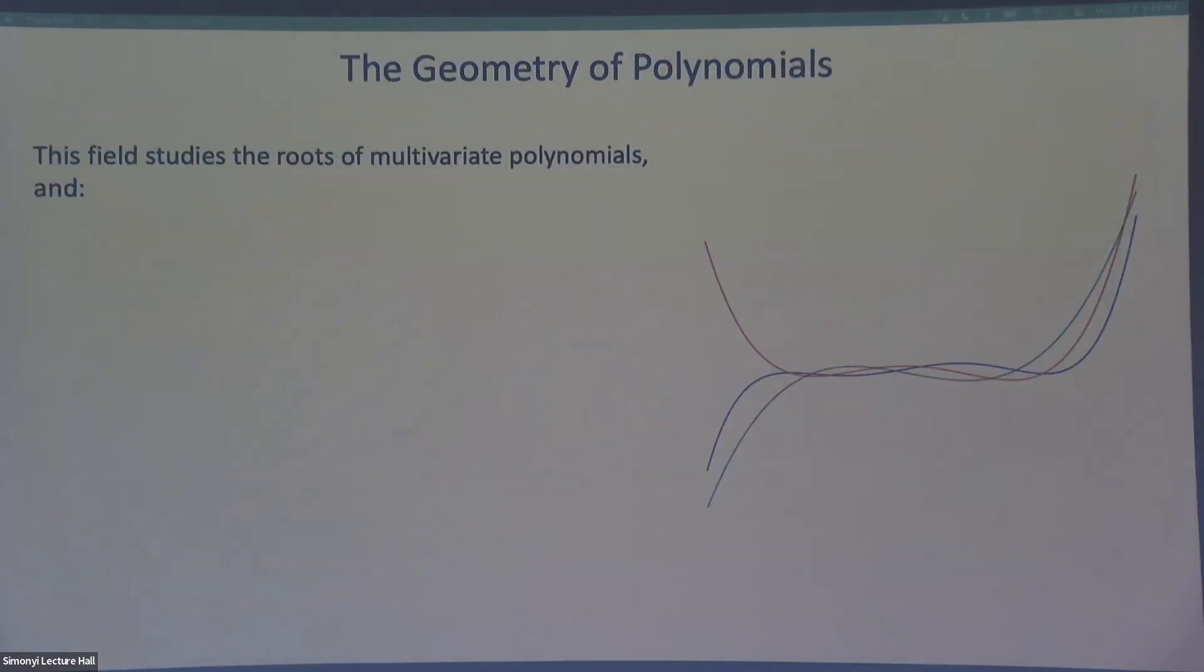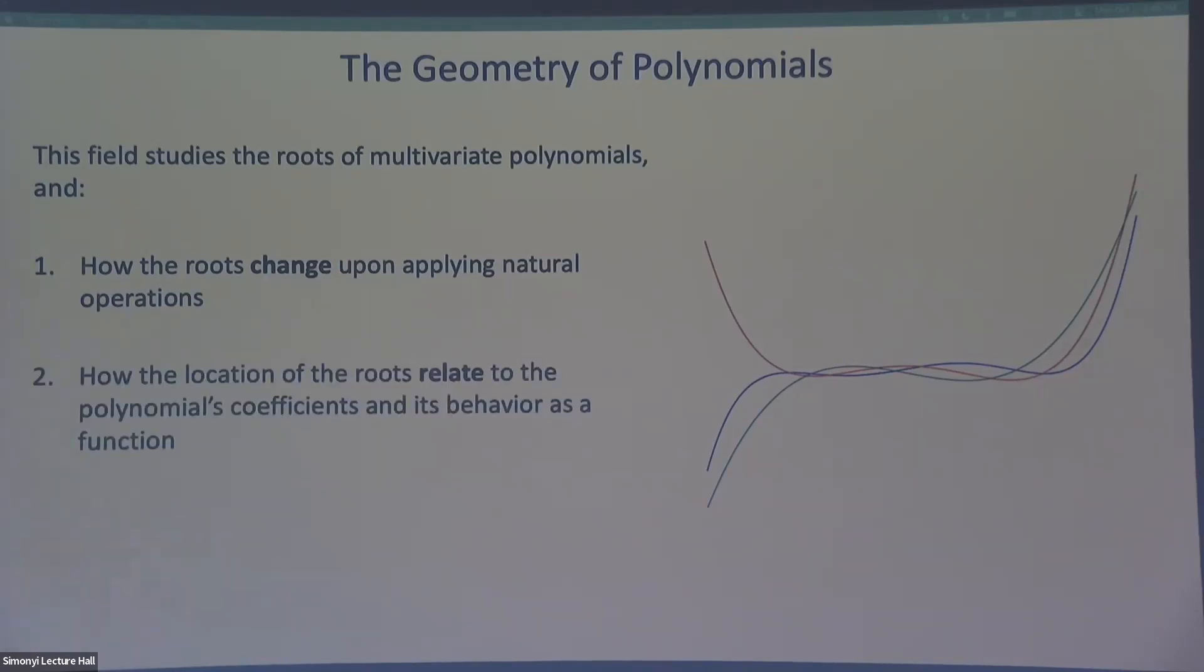Okay, so what is this field? It studies basically the roots of multivariate polynomials. And you study how the roots change when you apply some natural operations, maybe taking the derivative, swapping the coefficients, and so on. It also studies how the location of the roots relates to the polynomial as a function and its coefficients. So you can study a polynomial in three ways, right? Its zeros, its coefficients, or its behavior as a function. And this field is kind of interested in how those things relate to one another.